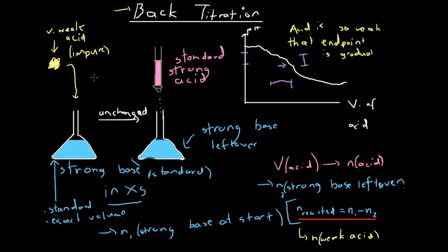We can't titrate a very weak acid directly with a strong base because the endpoint is quite gradual — the pH change is quite gradual — and so it's hard to identify using color change the exact equivalence point. Because of this gradual change, none of the indicators will have a sudden color change; they'll all change gradually, and so we won't have a precise figure for the volume of base reacted with the weak acid solution.